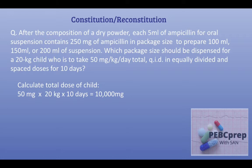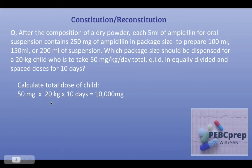The dose mentioned in the question is 50 mg/kg/day. Since the child weighs 20 kg, we multiply 50 mg × 20 kg. Do not get confused with QID or four times a day, because this is a per-day dose — it is up to you to divide it BID, TID, or four times a day.